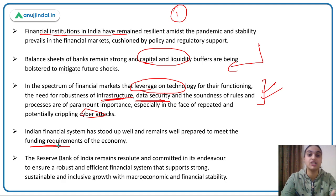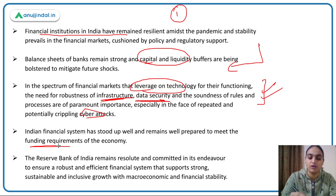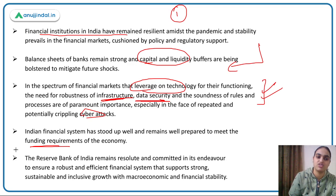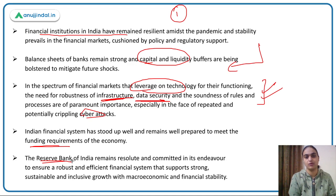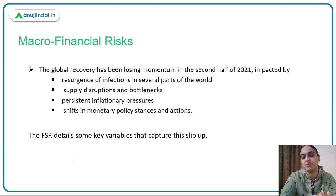RBI has continued with its accommodative stance for a longer time period and is still willing to provide support if the economy is suffering, if economic growth needs to be maintained, or if financial stability needs to be maintained. This is the broad overview from the Governor's viewpoint of what this report will focus on.